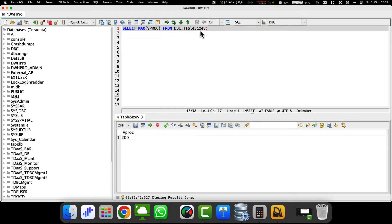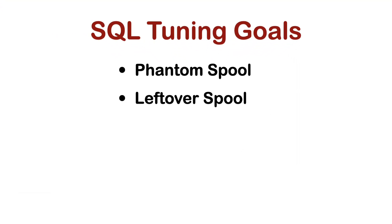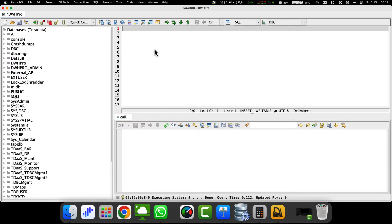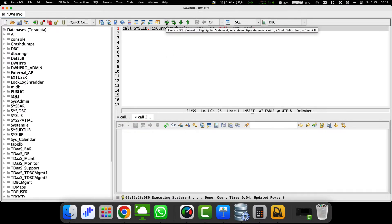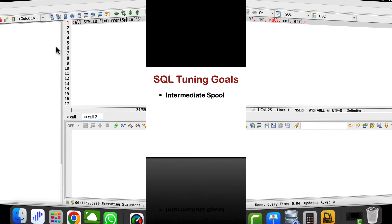Let's move on to a more rare problem: phantom spool and leftover spool. For phantom spool, the table dbc.databasespace shows that spool is in use, but Teradata occupies no space on the disk. A leftover spool is the Teradata spool space that remains occupied after a request has ended. The easiest way, without using the console, is to execute the following procedure. We can use this procedure to solve phantom spool problems and correct inconsistencies in the dbc.databasespace table.